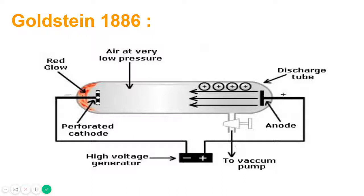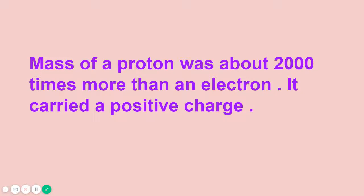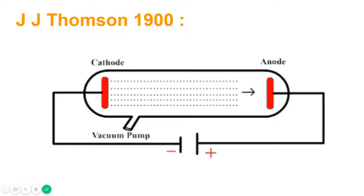However, in 1886, Goldstein came upon positively charged radiation in a gas discharge tube which he termed as canal rays. As you can see here, these are the canal rays and these are the protons. These radiations led to the discovery of the proton. The mass of a proton was about 2,000 times more than an electron. It carried a positive charge.